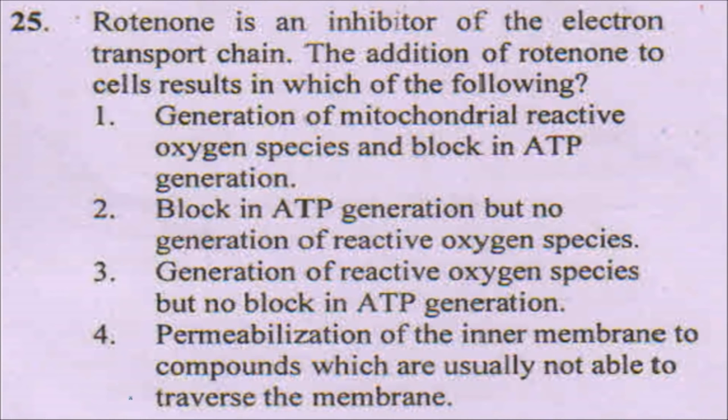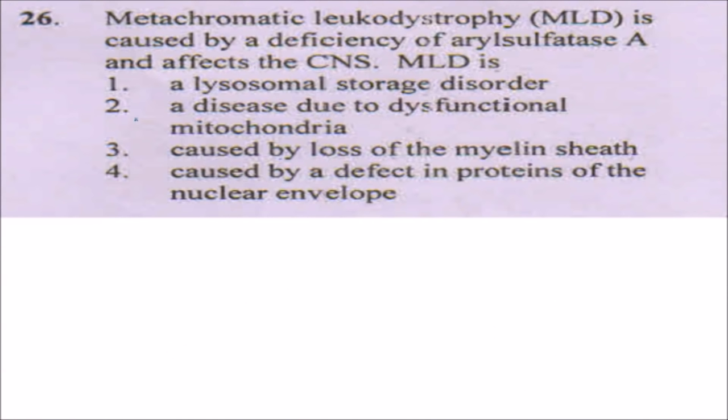The next question is: rotenone is an inhibitor of the electron transport chain. The addition of rotenone to the cell results in which of the following? Since it is an inhibitor of the electron transport chain, it will definitely block ATP production. The mechanism by which it blocks ATP is by generating reactive oxygen species in mitochondria. So the answer is number one.